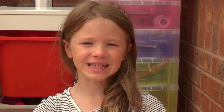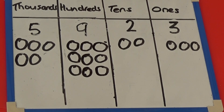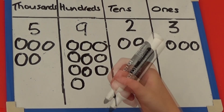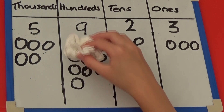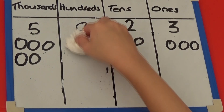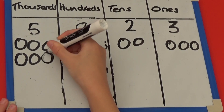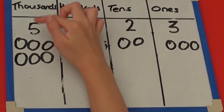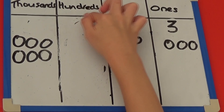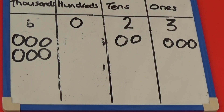We can also represent this as a picture. I have drawn out the counters for the number 5,923. If I add 100, I now have 10 hundreds. I need to rub out the 10 hundreds and exchange it for a 1,000. I now have 6,023.